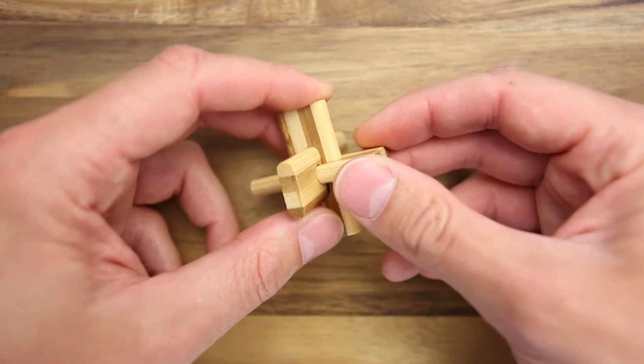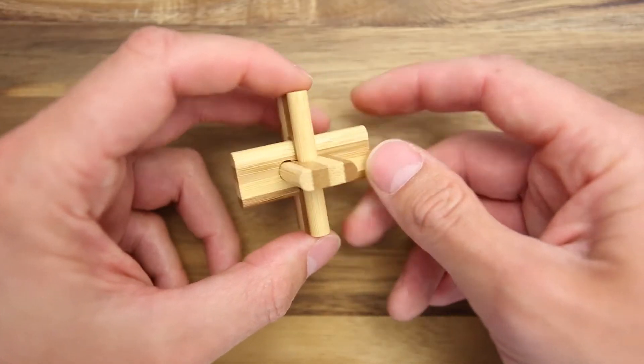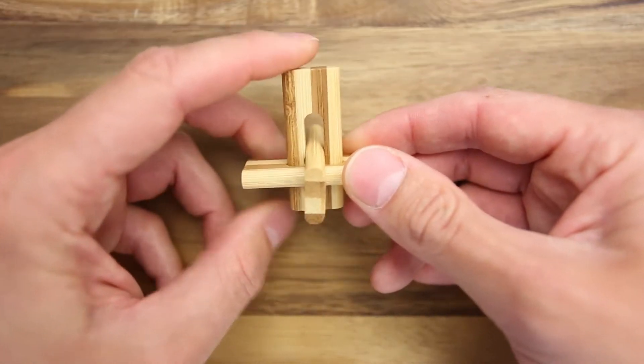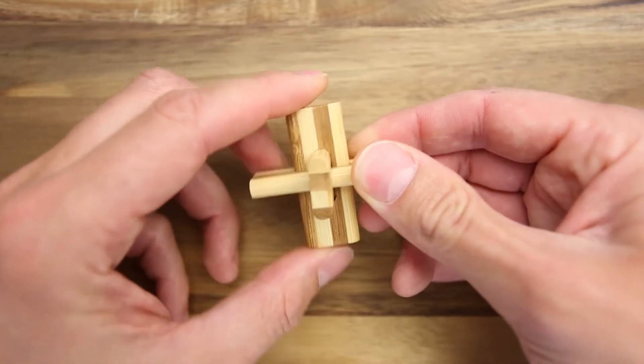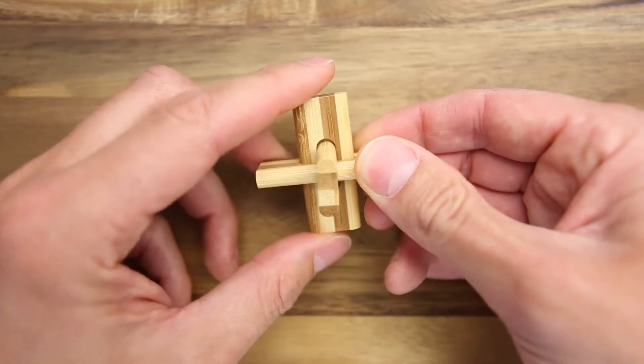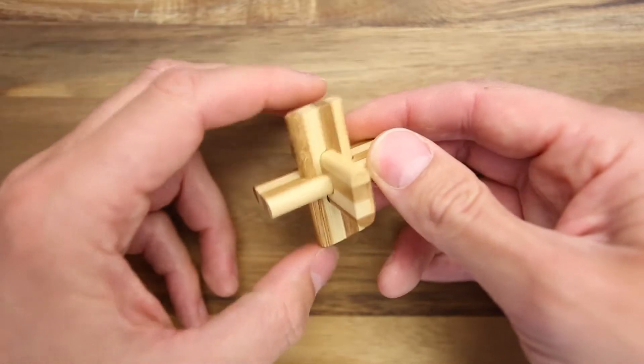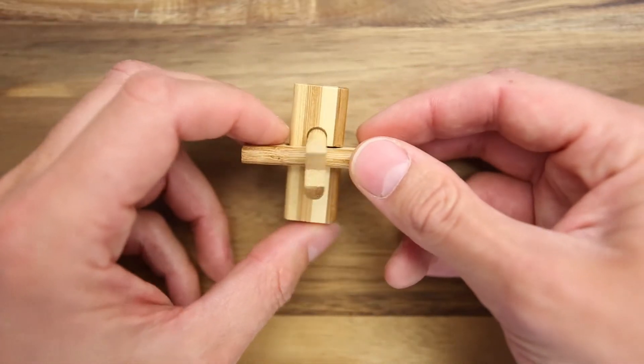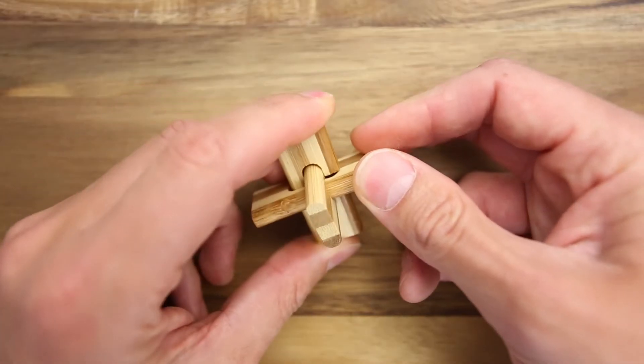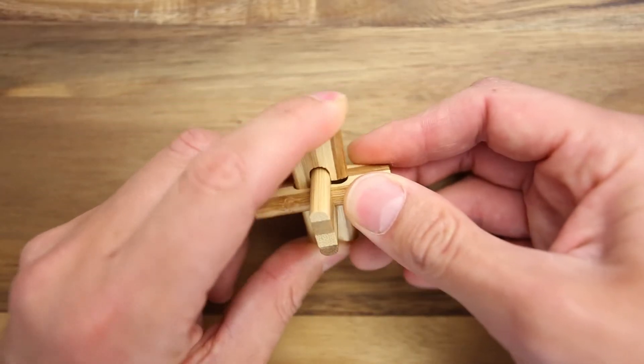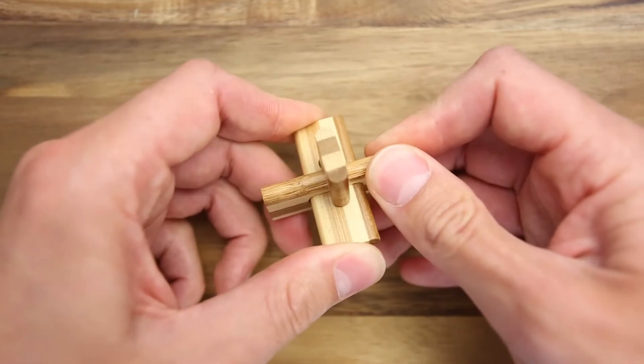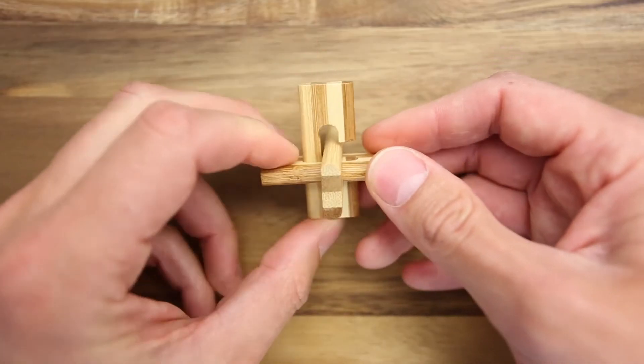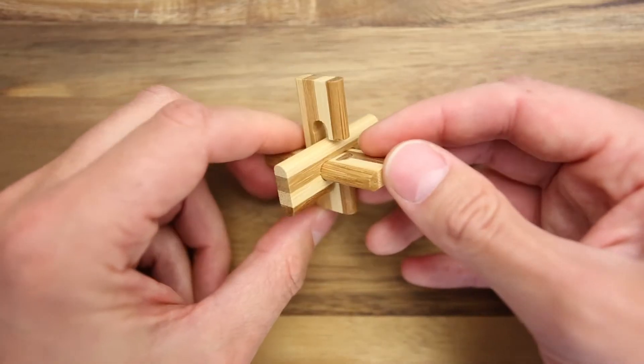So when you take this puzzle, the first move that you can find is that you can move this piece up and down. And the next one, what I found, was this move. I could move another part by pushing it from the bottom. That's how.